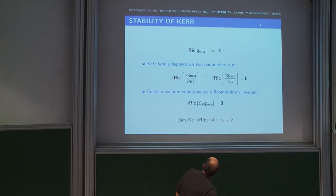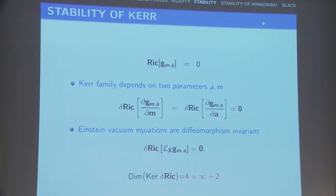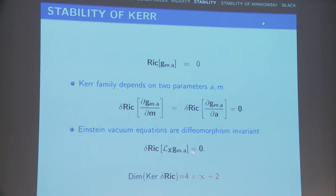In the case of the actual Einstein equation, the linearized Einstein equations are Ricci equal to zero. If you linearize around a Kerr solution depending on parameters m and a, the derivative of g with respect to m gives the family of eigenstates corresponding to zero eigenvalue, and similarly for a, giving a two-parameter family. Because the Einstein equations are diffeomorphism invariant, we have a huge kernel. The full dimension is 4 times infinity plus 2.